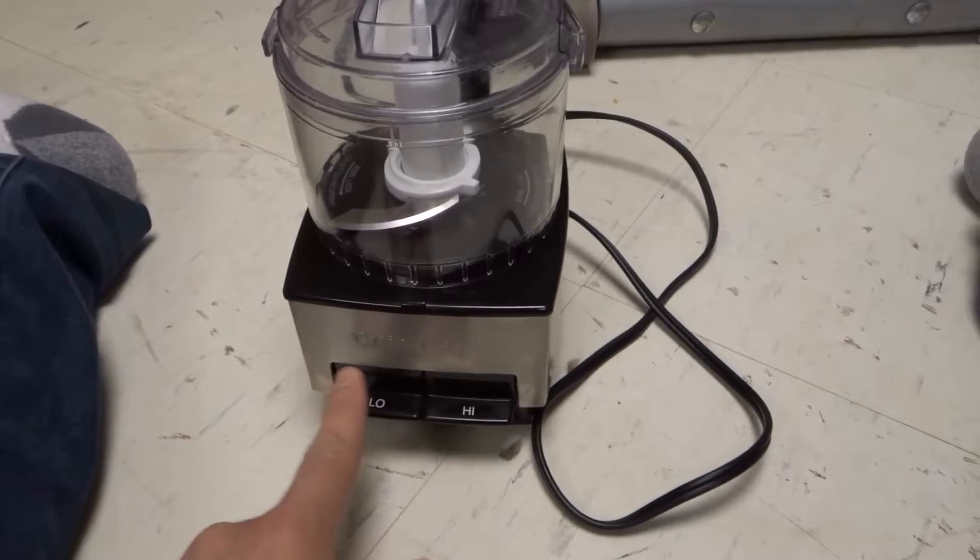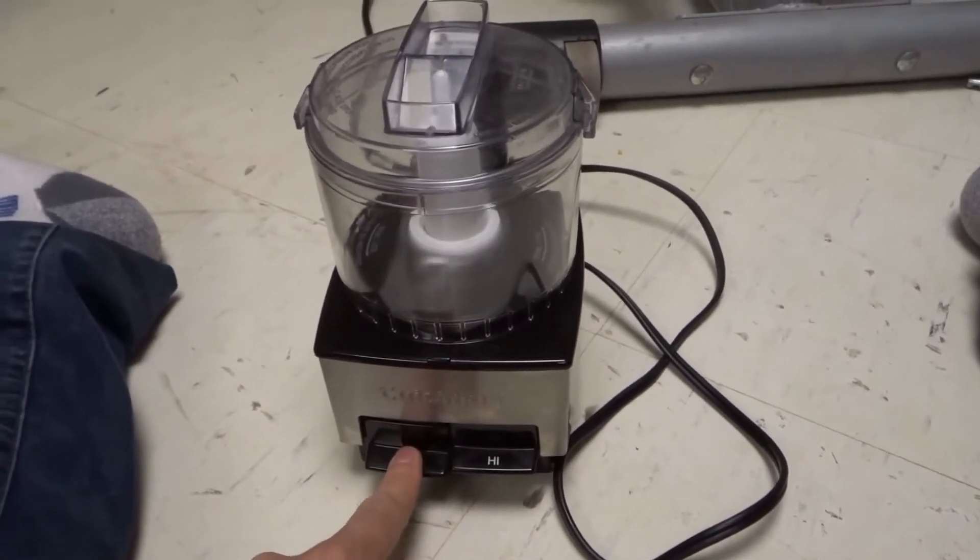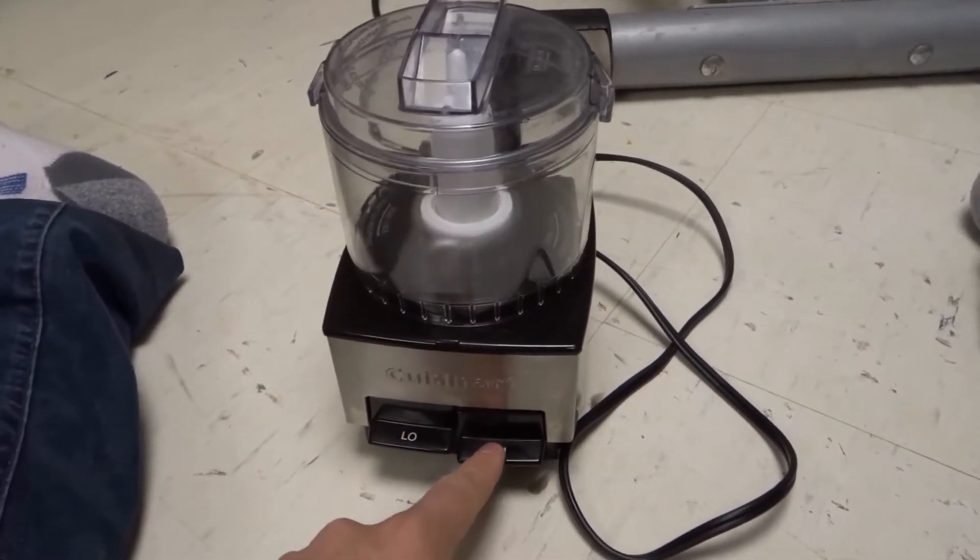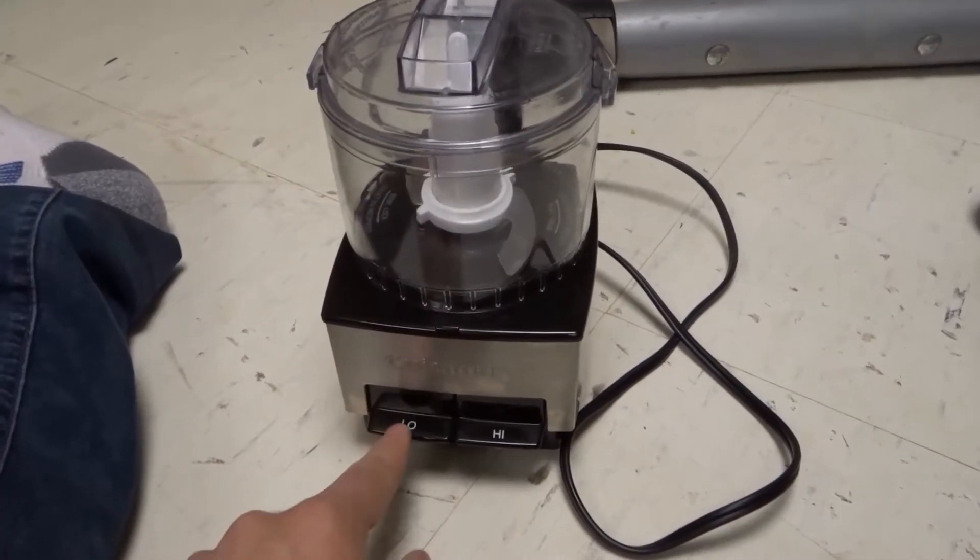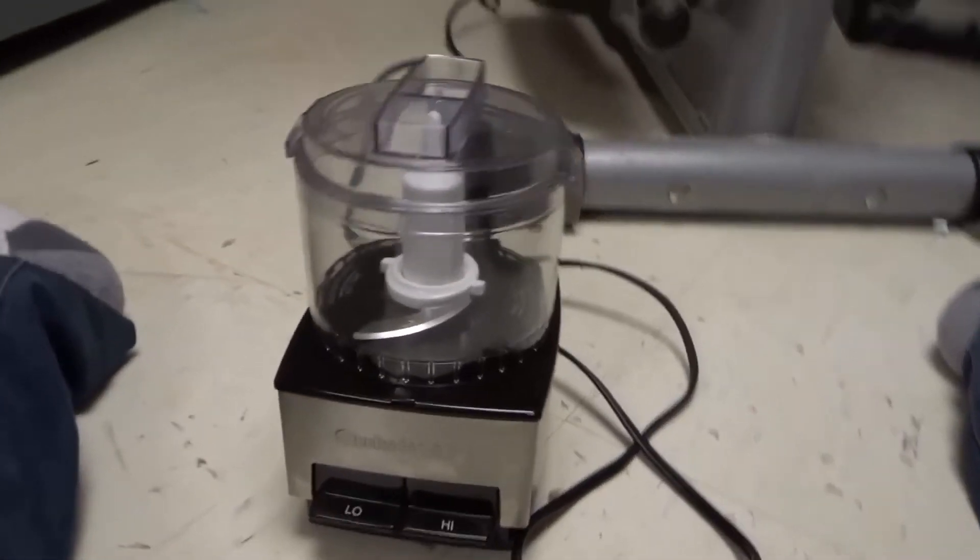There are two buttons over here. There is a low and there is a high. When you press and hold down the low mode, it will spin at a slow speed. When you press and hold down the high mode, it'll spin at a much faster speed. You can even hear the difference between the low mode and the high mode.